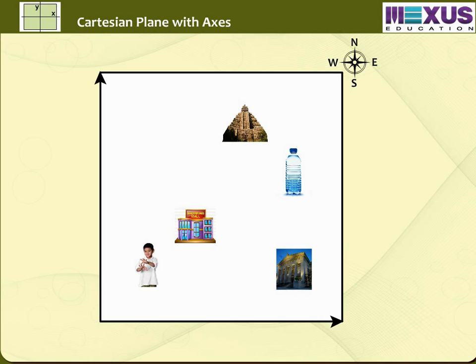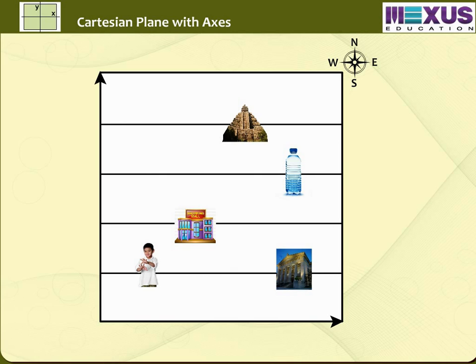Let us first draw parallel horizontal lines with a distance of one unit from each other on this map. Let the bottom line be AX. Now try to express the position of the boy, the museum, the mall, the bottle and the temple. We can say that the boy and the museum are on the first horizontal line, that is both of them are one unit away from the bottom line AX.